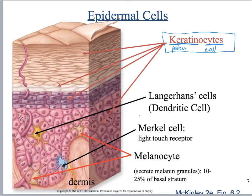Another type of cell is the Langerhans cell, or dendritic cell. This is a type of immune system cell that crawls in between all the other cells, migrating and looking for pathogens, which it will then engulf.